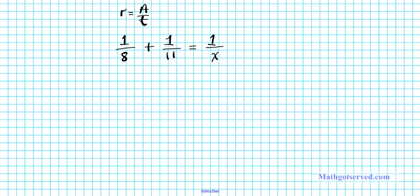So the first thing we're going to do is combine these two like terms. If we combine them, we'll have 11 plus 8 divided by 88 equals 1 over x.